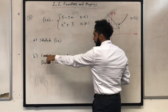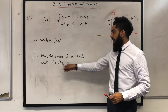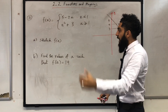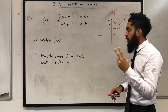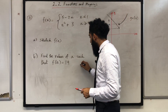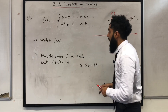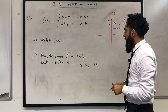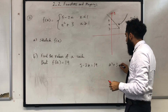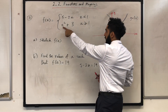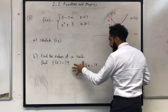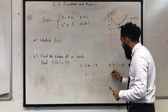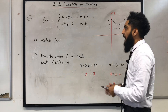For part b, find the values of a such that f(a) = 19. This gives rise to two equations: 5 - 2a = 19, which gives a = -7, and a² + 3 = 19, which gives a = ±4. That completes the question.